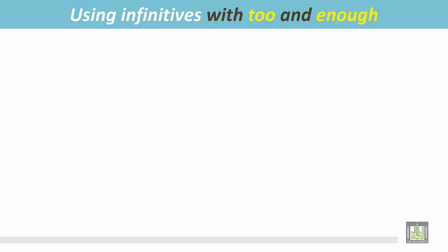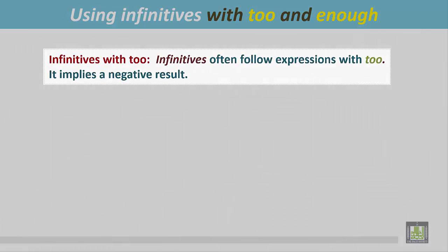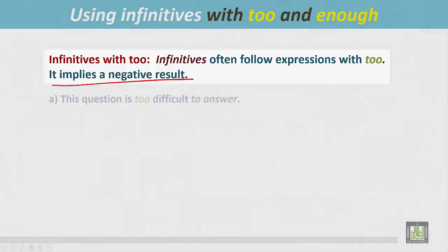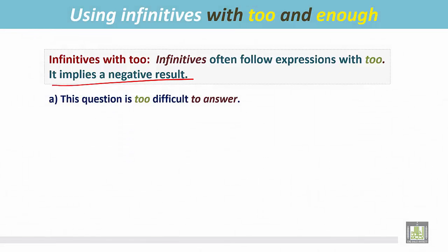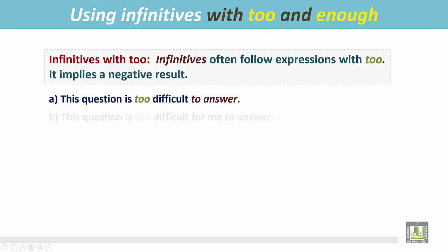Using infinitives with 'too' and 'enough.' Infinitives often follow expressions with 'too,' implying a negative result. For example, 'This question is too difficult to answer' means we couldn't answer it because it was very difficult. 'This question is too difficult for me to answer' means I couldn't answer it because it is very difficult for me.